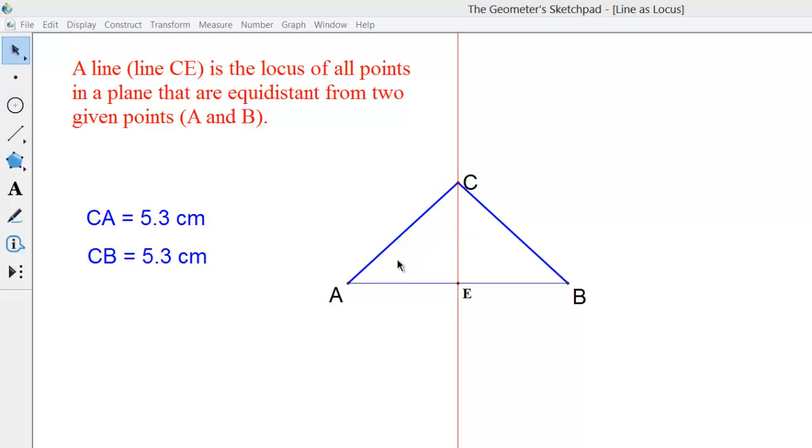So as you can see right now those two are equal and this point C then is a point on our line and we can see that it's equidistant.